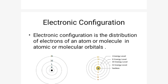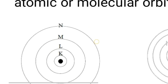Electronic configuration is the way of distributing electrons in each and every shell or orbit. We call the first shell the K shell or first energy level. Then comes the L shell or second energy level, then M — the third energy level — and N, the fourth energy level. These shells surround the nucleus.